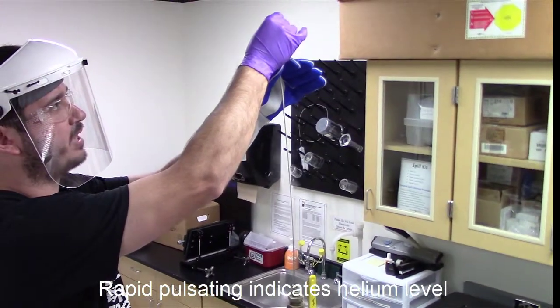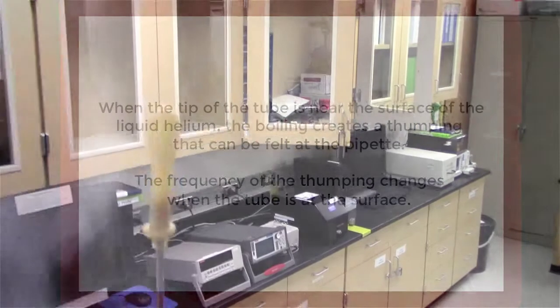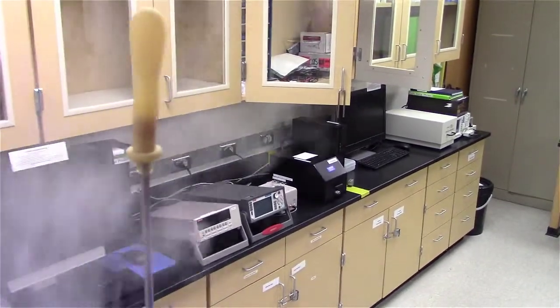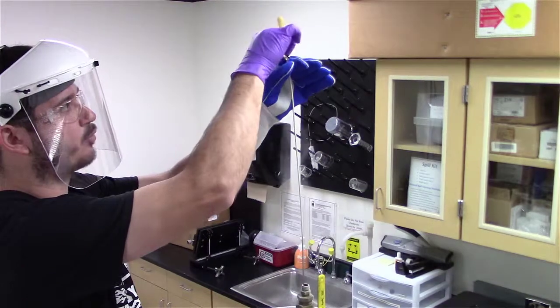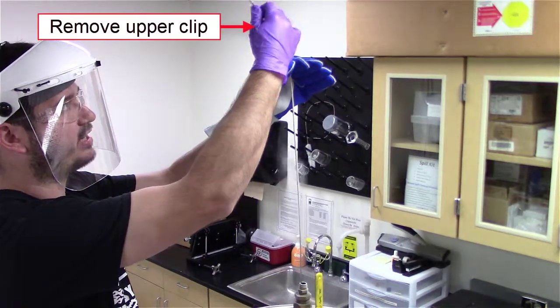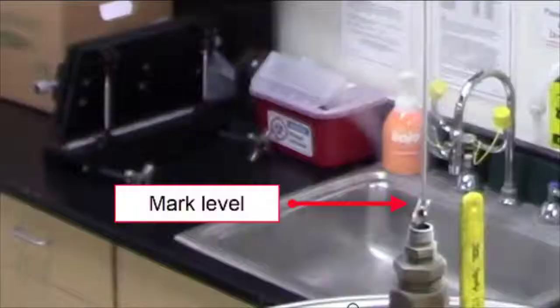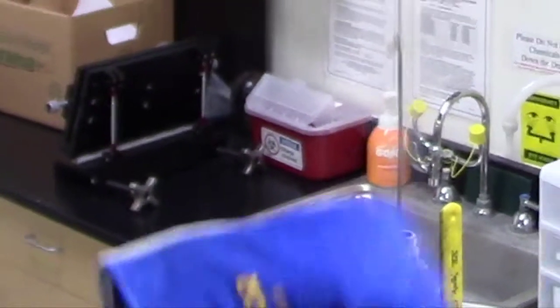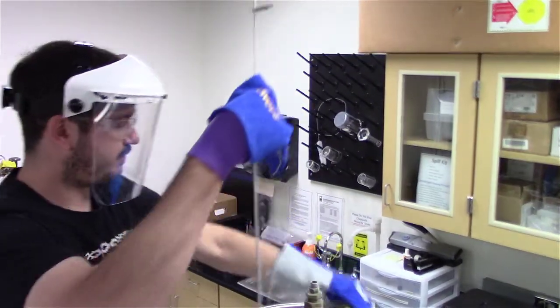Right there is my helium level. I'm going to remove the upper clip, the one I did not place, and mark that level. I'm going to remove the rod from the chamber and close the vent.